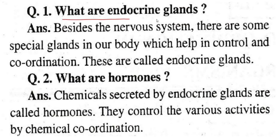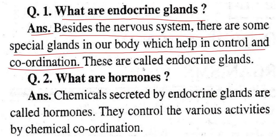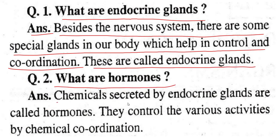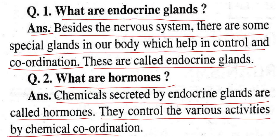Question: What are endocrine glands? Answer: Besides the nervous system, there are some special glands in our body which help in control and coordination. These are called endocrine glands. The chemicals secreted by endocrine glands are called hormones. They control various activities by chemical coordination.